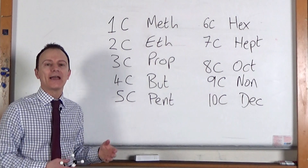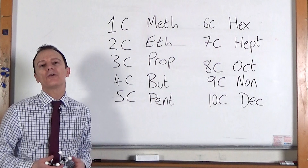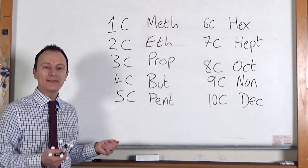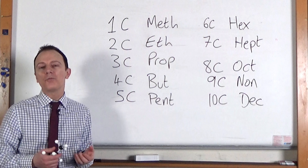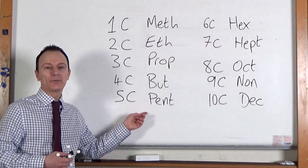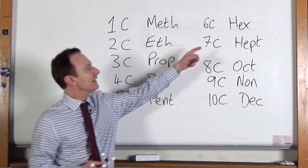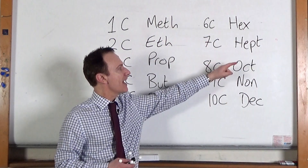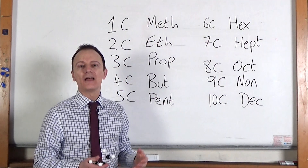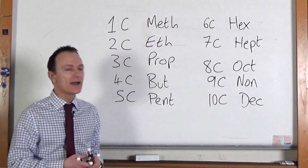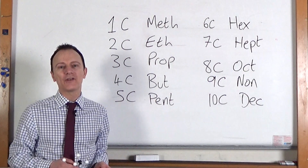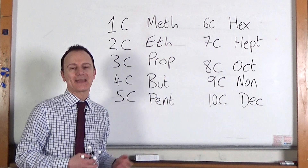After that, it becomes a bit easier. We all know that a five-sided object in maths is a pentagon. So a molecule with five carbon atoms in the main chain begins with the word pent. Hex is six. Hept is seven. Oct is eight. Non is nine. And finally, a molecule with ten carbon atoms in the main chain begins with dec.